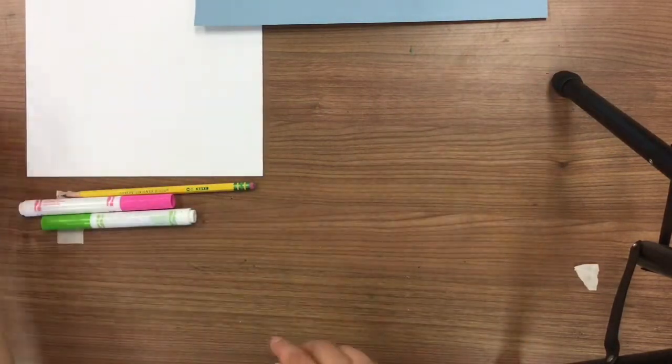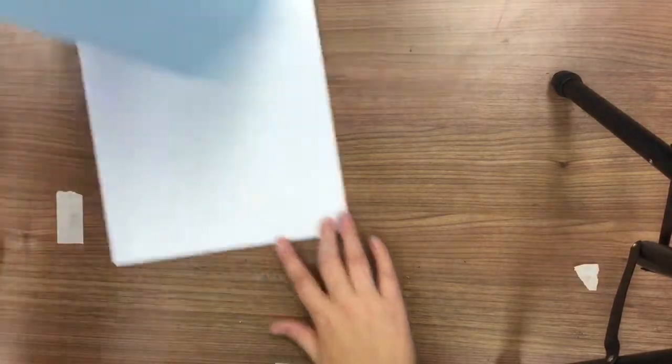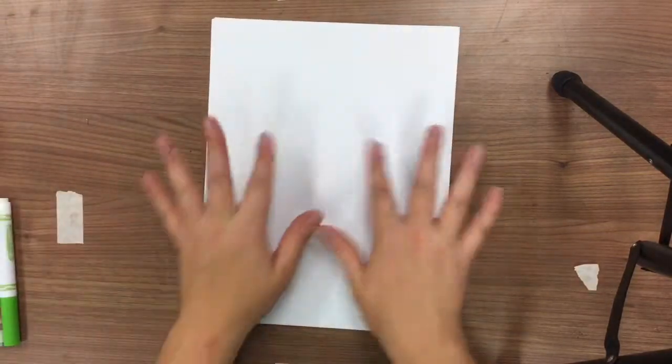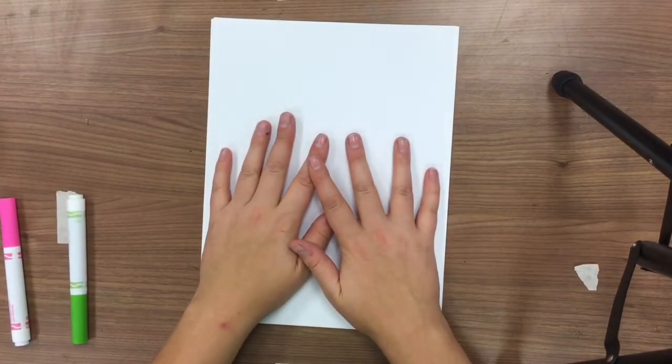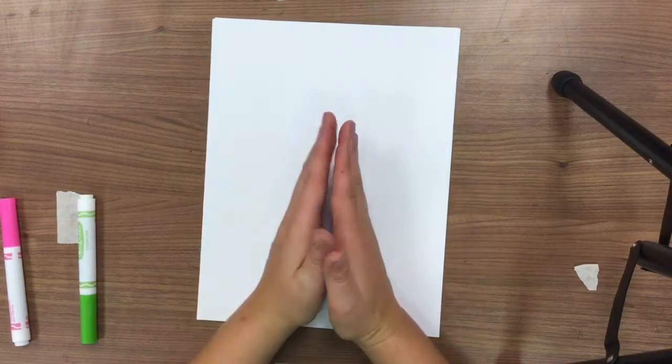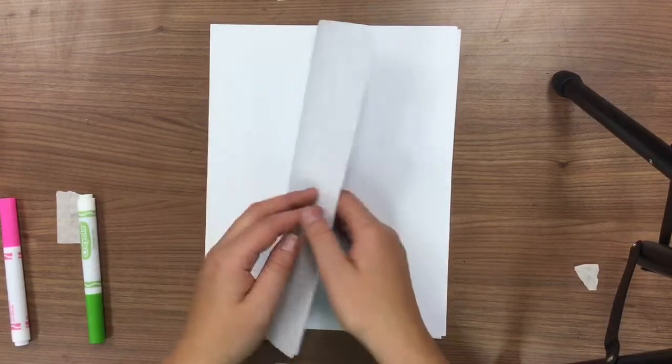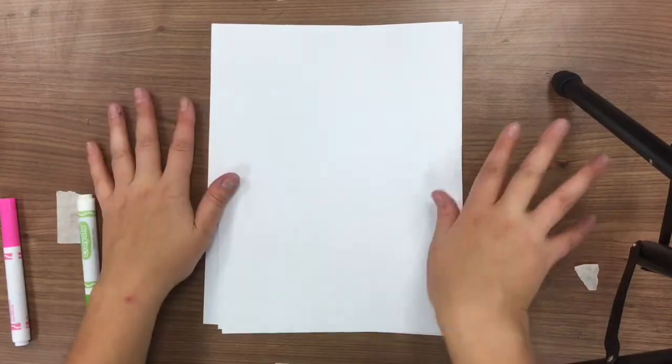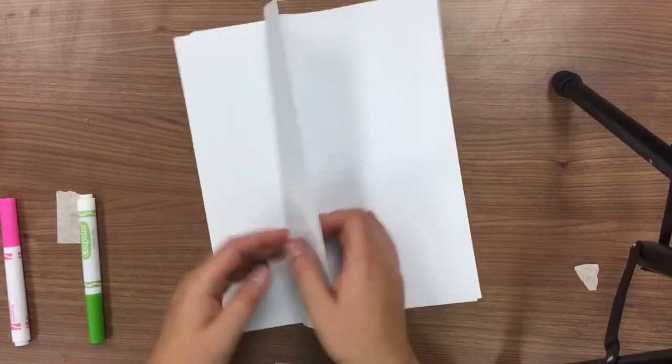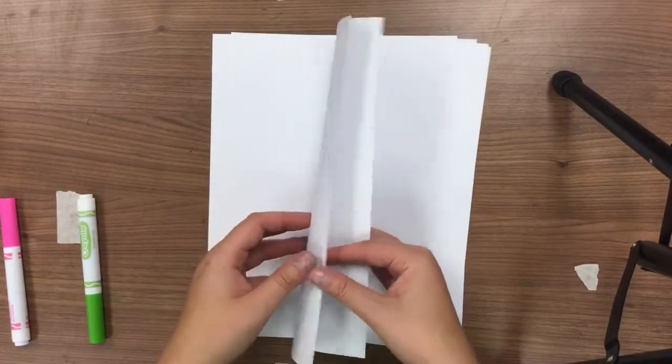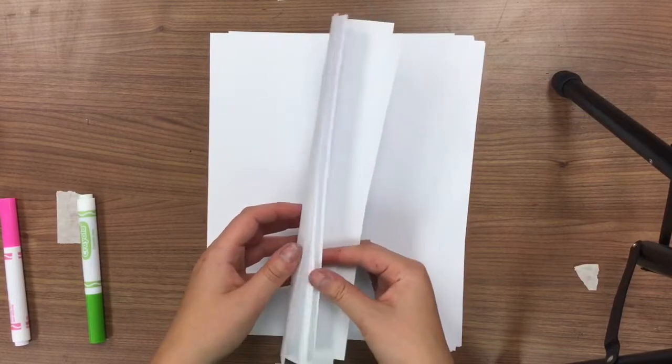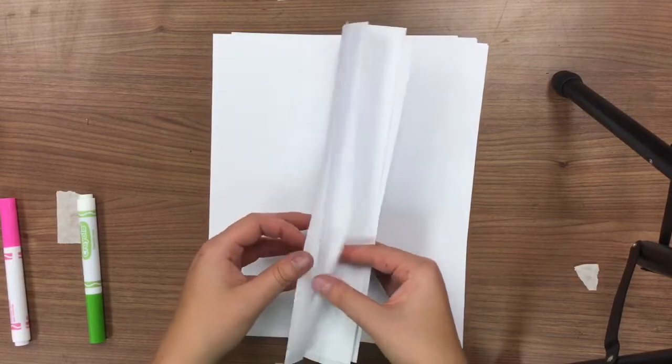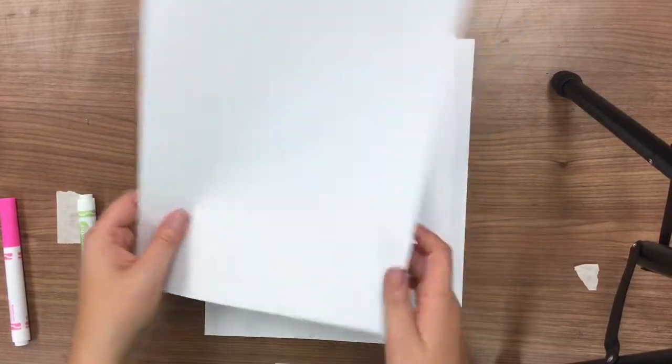So the first thing you are going to do is you are going to take your 10 pieces of paper and you are going to split the stack in half. So you have two different piles, 5 and 5, so 1, 2, 3, 4 and 5. Okay?